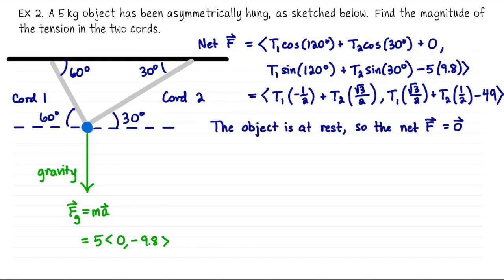Again, the guiding principle for the rest of the problem is that because this object is hanging at rest, the net force should be the zero vector. That gives us a system of two equations for the two unknowns. We don't know T1 or T2, but luckily we have two component equations that we can use to solve for them. So just based on the x coordinate, I can say that T1 times 1 half must be equal to T2 square root of 3 divided by 2. That's from setting the x component equal to zero.